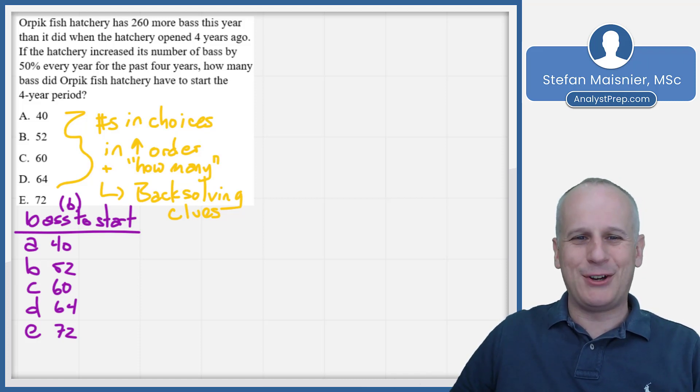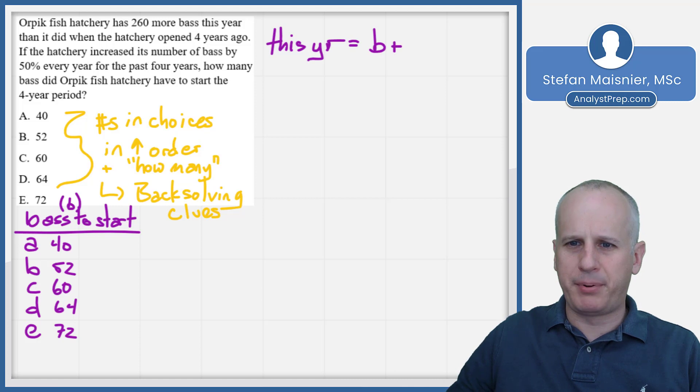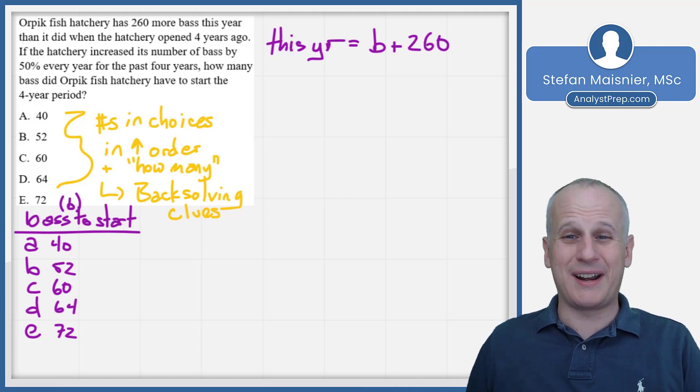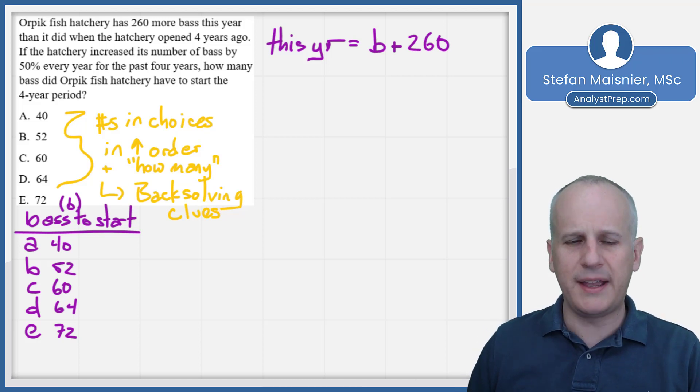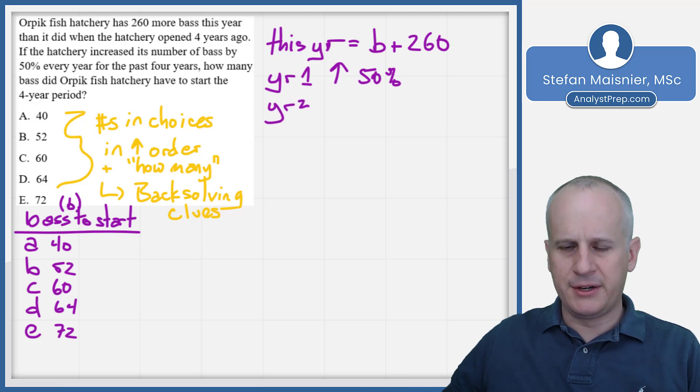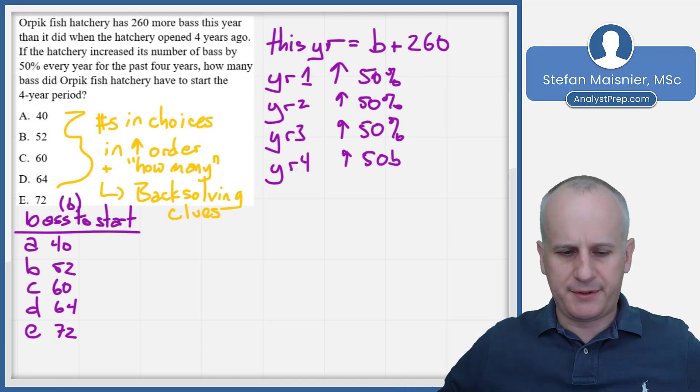I'm not saying we have to back solve, but saying that it might be viable. So we'll start taking notes at the beginning. Orpik Fish Hatchery has 260 more bass this year than it did when the hatchery opened four years ago. Okay, so we know that this year is equal to bass plus 260. You don't want to write it out algebraically unless you're 100% certain of what this year is - you can just kind of take it as a note. And we know in the next sentence the hatchery increased its number of bass by 50% every year for the past four years. Okay, so we know that year one up 50%, year two it goes up 50%, year three it goes up 50%, and year four it goes up 50%.